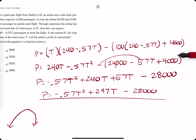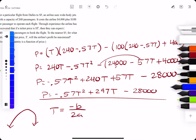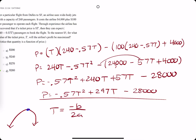We use the vertex for t — the t-value of the vertex, using the x-value of the vertex formula: negative b over 2a. In order to find the ticket price for the maximum, negative b would be negative 297. The a value is negative 0.57, so 2 times negative 0.57.